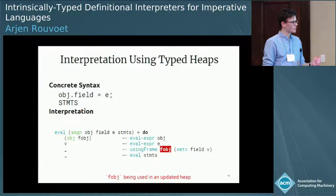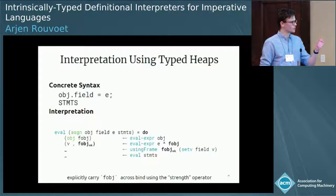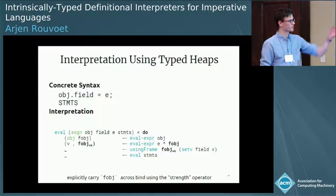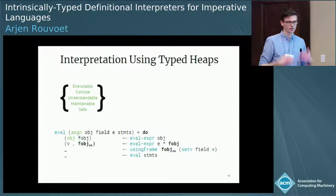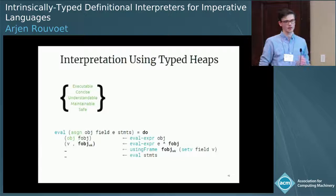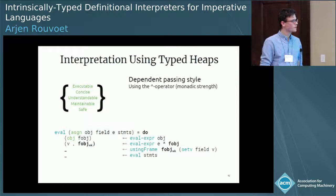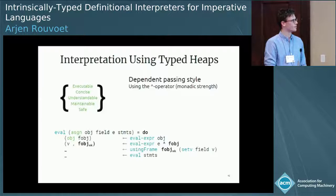In the paper, we propose a more elegant solution, which is to use what is essentially the strength operator of the strong monad to carry these side pointers across binds, so we may safely use them in an updated heap. We believe that this interpreter has all of the properties that we like. It is executable because it's an interpreter. It's still concise and understandable. It's maintainable because we don't have this extrinsic proof. And finally, it's type safe by construction.